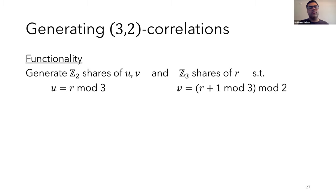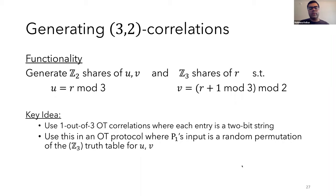Now, for the 3-2 correlations that we require, the functionality is to generate Z2 shares of U and V and Z3 shares of R such that U equals R mod 3 and V equals R plus 1 mod 3 mod 2. And for this, we'll use 1 out of 3 OT correlations where each entry is a 2-bit string. Now, all of the parties in the protocol use these correlations in an OT protocol where party 1's input is a random permutation of the Z3 truth table for U and V. So essentially, we have two bits for each Z3 value and a total of six bits of communication in one message from P1 to P2 per instance.